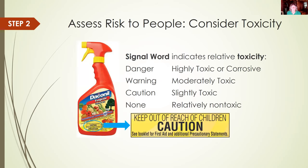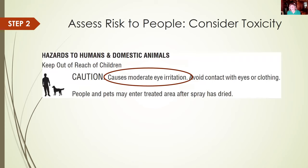To assess risk to people, a great tool is the signal word on the front panel of the label — this indicates relative toxicity. 'Danger' means highly toxic or corrosive to skin or eyes. 'Warning' means moderately toxic. 'Caution' means slightly toxic. No signal word means it's relatively non-toxic. There will also be precautionary statements on the label, easy to find, telling you what routes of exposure might be of concern and how to avoid that type of exposure.